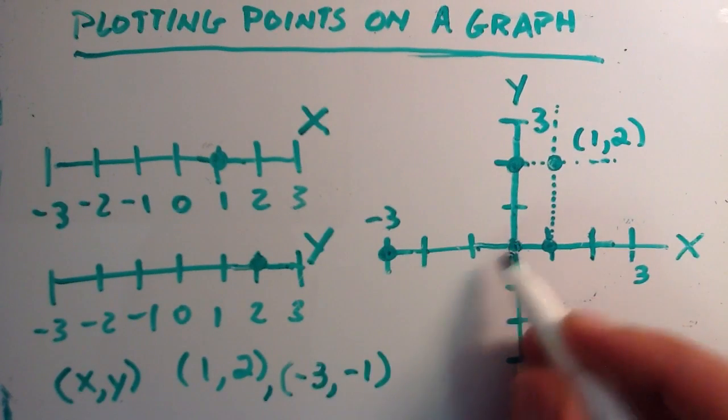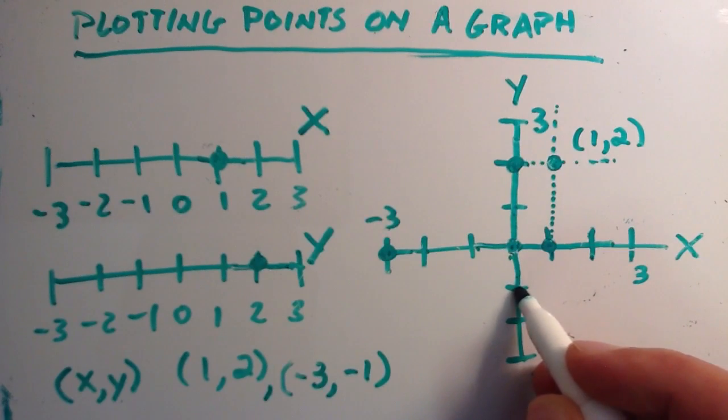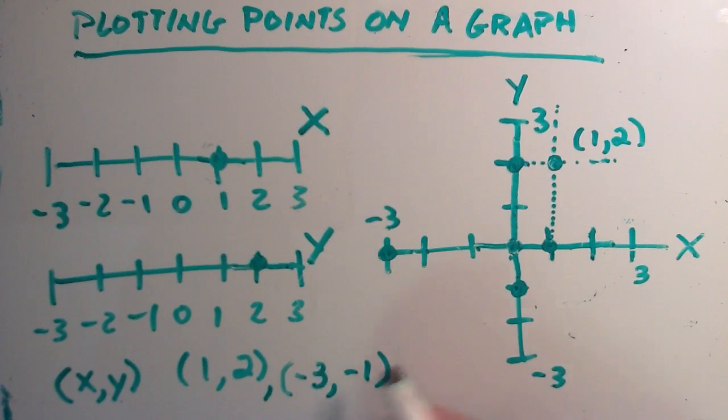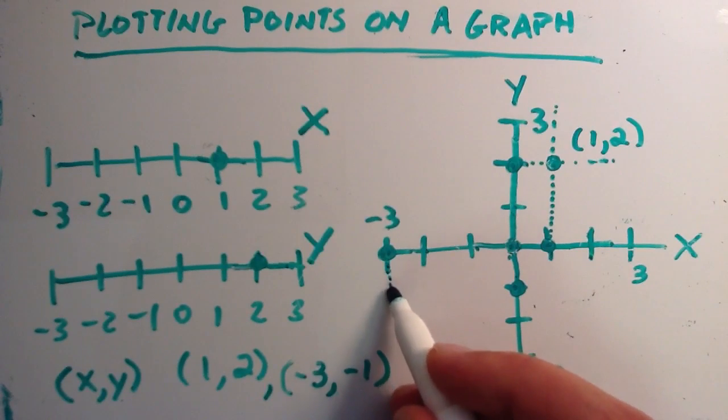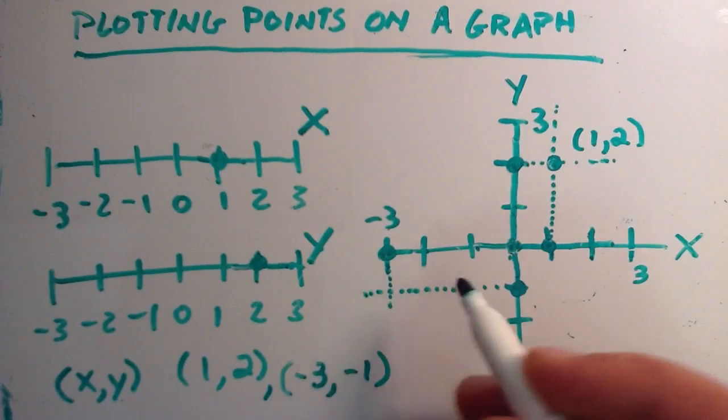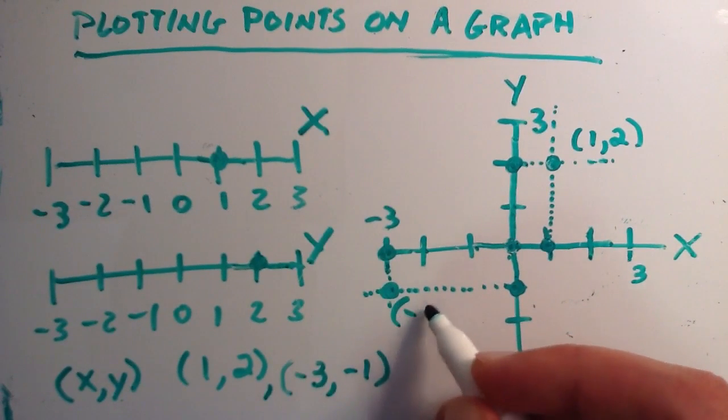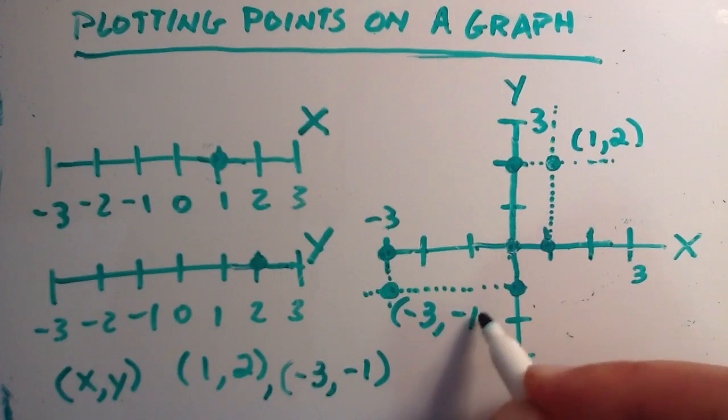And the y is negative 1, so we start at 0. And because it's negative we go down 1, so this is negative 1. So the point (-3, -1) is represented by drawing these projections off of the axis from those points. And where they cross represents the point (-3, -1).